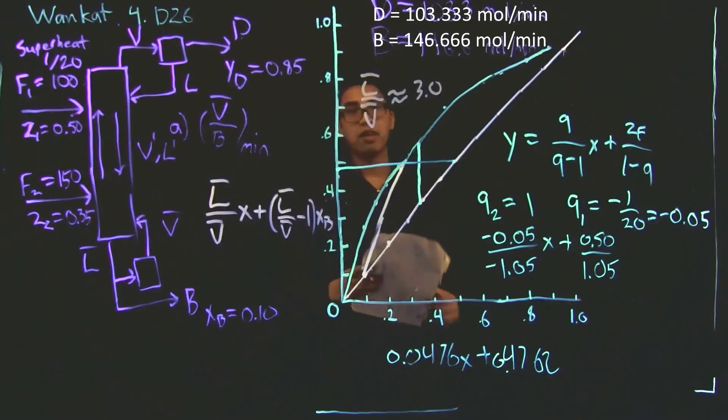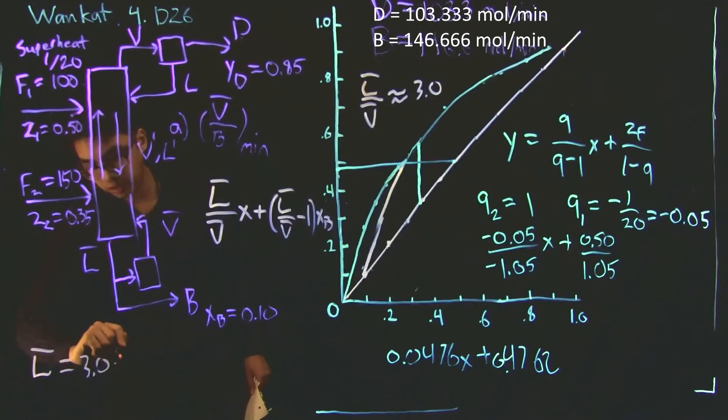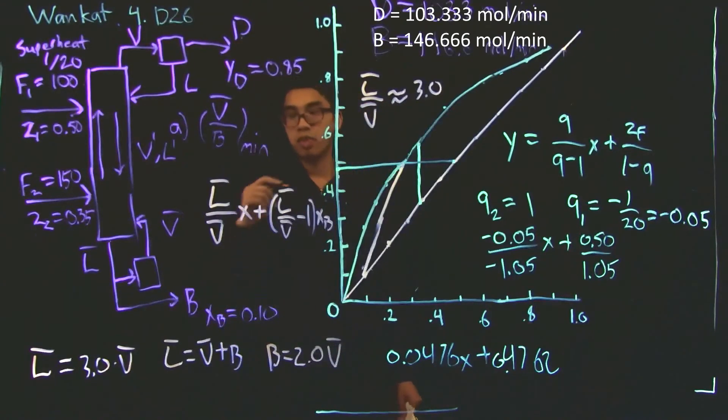Now, the next step, obviously, is to just calculate V bar. So we know that, from that, if we rewrite it, we know that L bar is equal to 3.0 times V bar. We also know that L bar is equal to V bar plus B. So if we substitute this in, we'll find that B is equal to 2 times V bar. And so therefore, V bar over B is equal to 1.5.